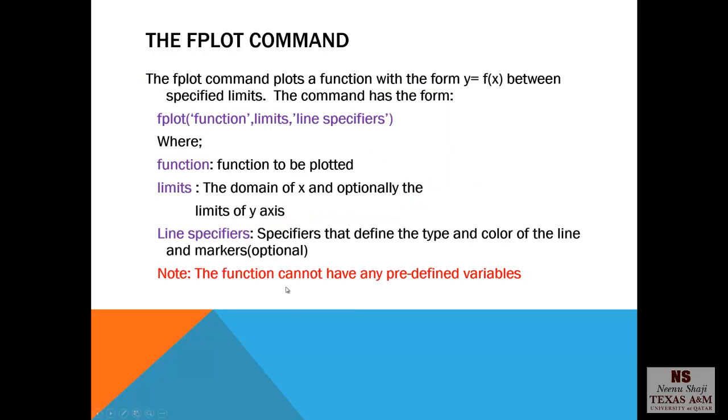The fplot command. It plots a function of the form y equal f of x between specified limits. The command has the form fplot. You write the function in single quotes, that is as a string. Limits and line specifiers. Limits means the domain of x. So that is a mandatory field. And optionally the limits of y. Line specifiers, that is the specifiers that define the type and color of the line and markers. So that is also optional. There is a note. The function cannot have any predefined variables. So it should purely be in terms of the independent variable.